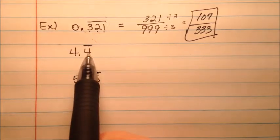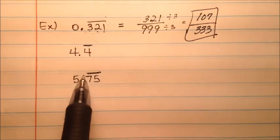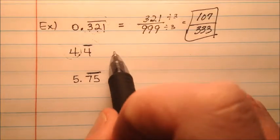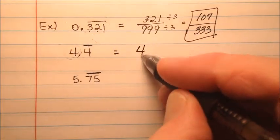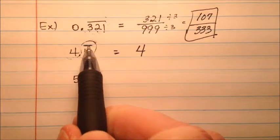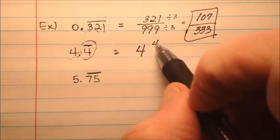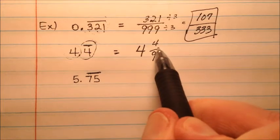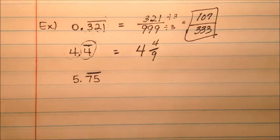So this next example is 4.4, and this 4 is repeating. Kind of like we saw in the last video, the whole number here just comes along for the ride. So 4, and then this decimal portion that repeats is going to be 4 over 9. So it's going to be 4 and 4/9. We see that this cannot reduce, so we'll just leave it just like that.